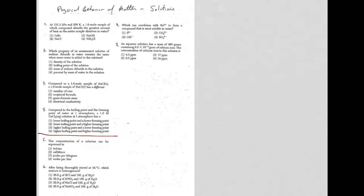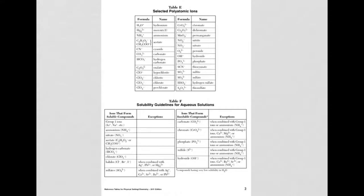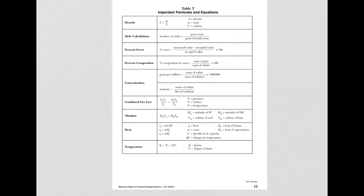For question 5, it says the concentration of a solution can be expressed in. When I'm dealing with concentration, there's a couple of different ways that we can look at this. If I go back to reference table T, under concentration here, there are two different formulas. One is parts per million, mass of solute over mass of solution. And one is molarity, moles of solute over liters of solution.